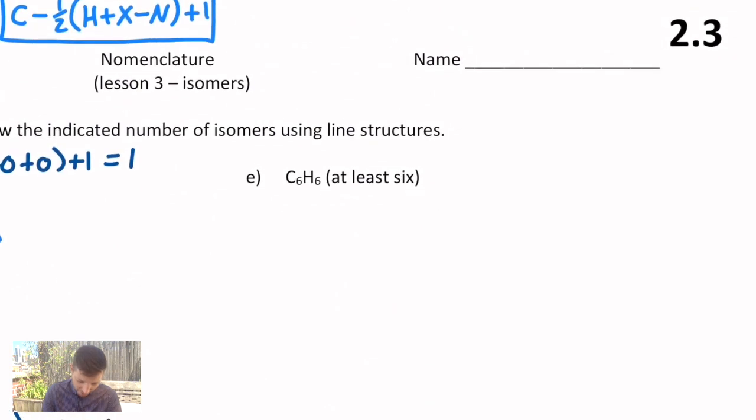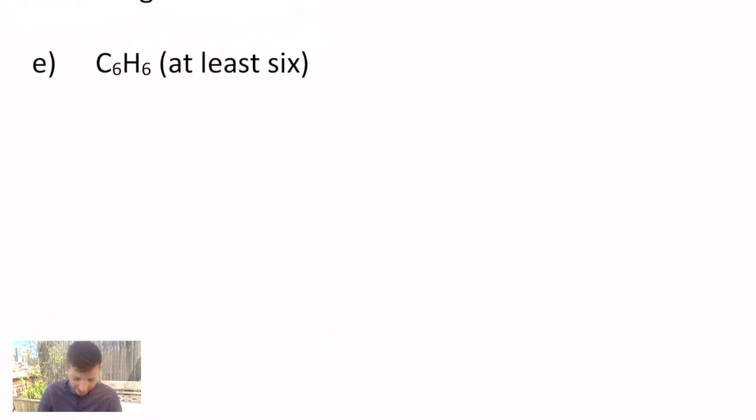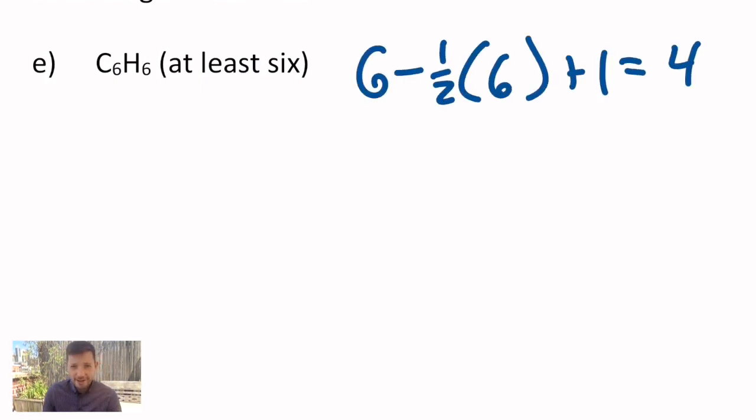I'm actually going to skip E, or at least I'm not going to do all of them. E has quite a number of unsaturations. You can just challenge yourself to come up with a lot of crazy examples. The degrees of unsaturation would be six minus one-half of six plus one. That's four. There are four possible unsaturations. And one is, I hope, the very familiar six-membered ring that looks like that. That's benzene. If you don't already know that, you should.